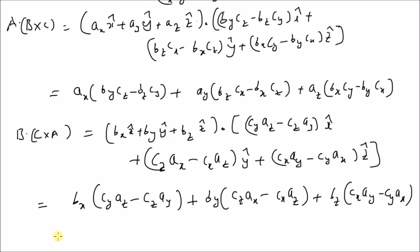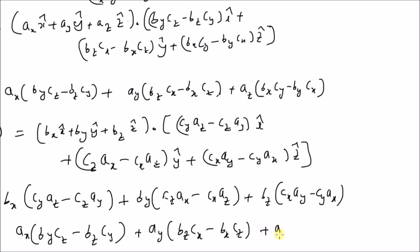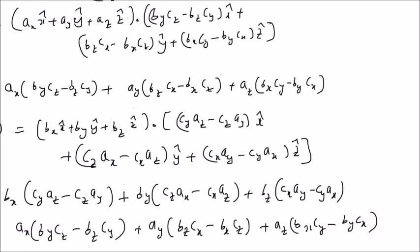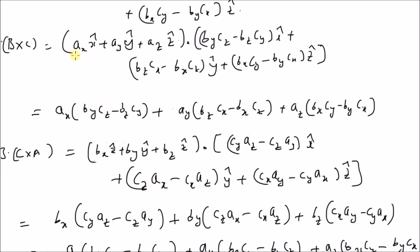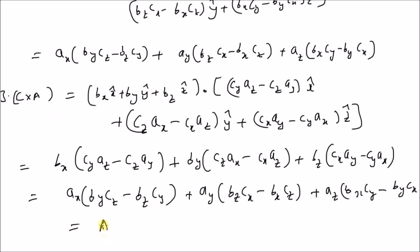This can be rewritten by taking AX common from the relevant terms: AX·(BY·CZ − BZ·CY), then taking AY common: AY·(BZ·CX − BX·CZ), and finally taking AZ common: AZ·(BX·CY − BY·CX). By examining this result alongside A dot B cross C, we can clearly see that B dot C cross A is also equal to A dot B cross C.